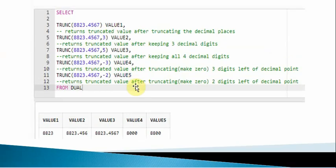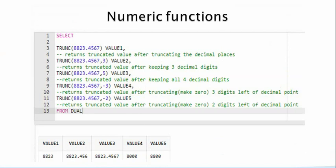Let's discuss this with a few examples. The first example is TRUNC of 8823.4567 — this will remove the decimal places and return the whole number. Now if I provide n2 as 3, it will truncate but keep three digits after the decimal point, keeping 4, 5, 6 and truncating only 7.